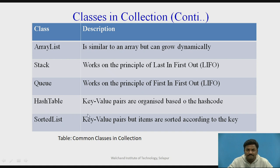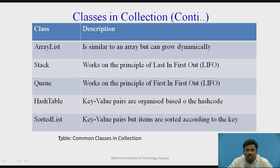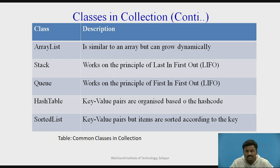Hashtable works on the principle of key-value pairs. A unique key is inserted, and for every key there is a particular value — for example, a phone number as key and a name as value. The key must be unique, but values can be repeated. SortedList is an extension of Hashtable — the same key-value pair principle is used, but the result is always stored in sorted order. For a telephone directory sorted by surname, SortedList would be preferred.